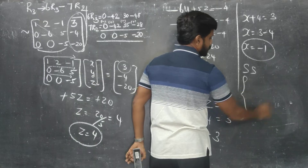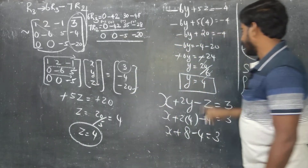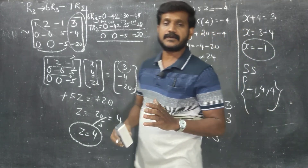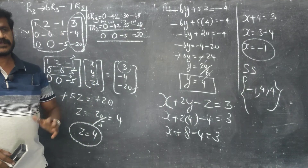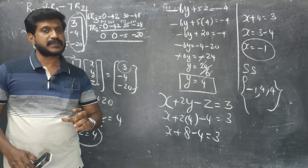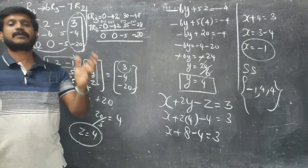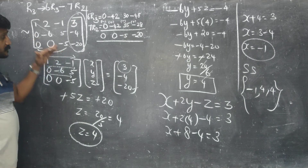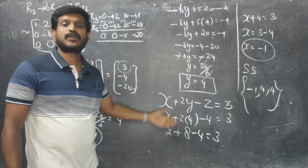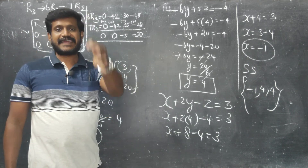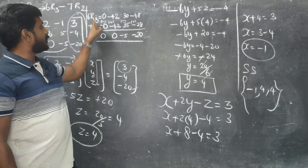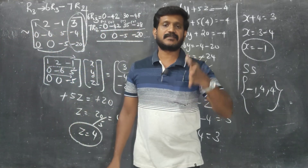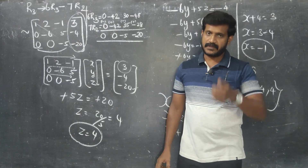Therefore, our solution set is x equals minus 1, y equals 4, z equals 4. By the Gaussian elimination method, the answers are very clean. In summary: form the augmented matrix A|B, perform elementary transformations to reach row echelon form, then apply back substitution to find x, y, and z. Thank you very much.